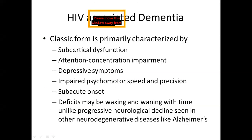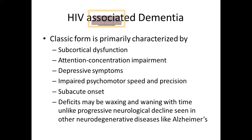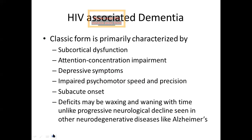The classic form of HIV associated dementia is primarily characterized by subcortical dysfunction — unlike Alzheimer's and other cortical dementias. There is attention and concentration impairment, depressive symptoms, impaired psychomotor speed and precision. The onset is generally subacute, and deficits may be waxing and waning with time, unlike the progressive neurological decline seen in neurodegenerative diseases like Alzheimer's disease.